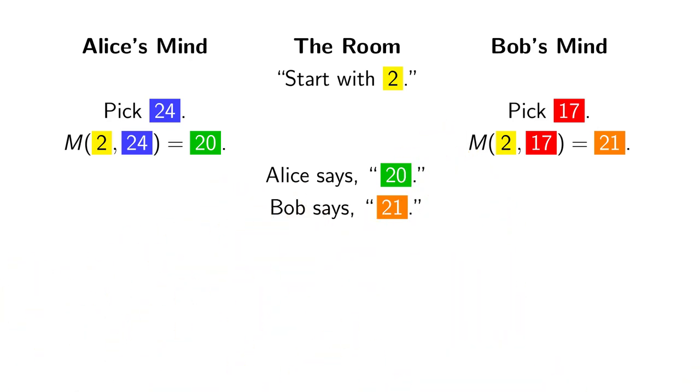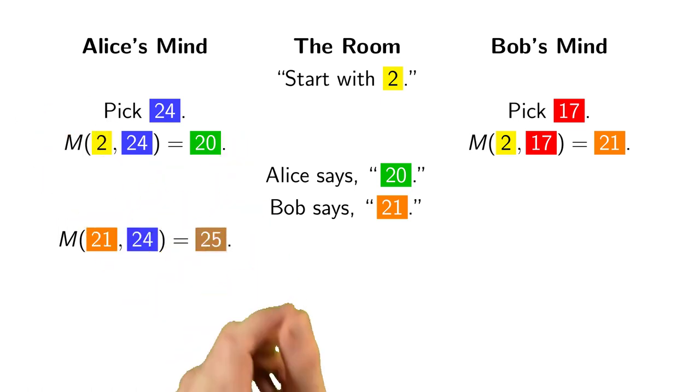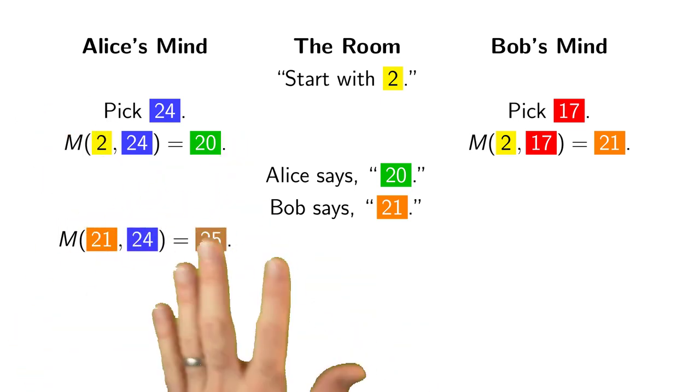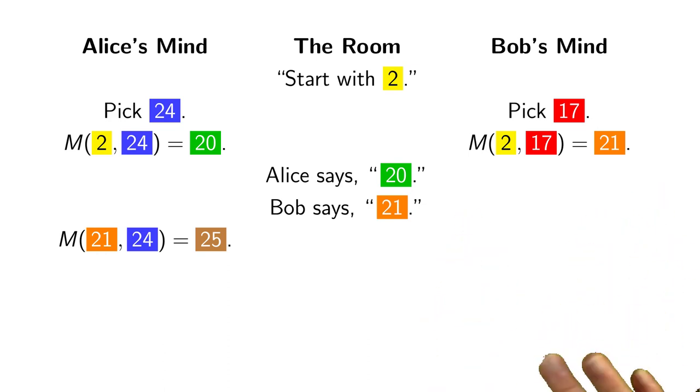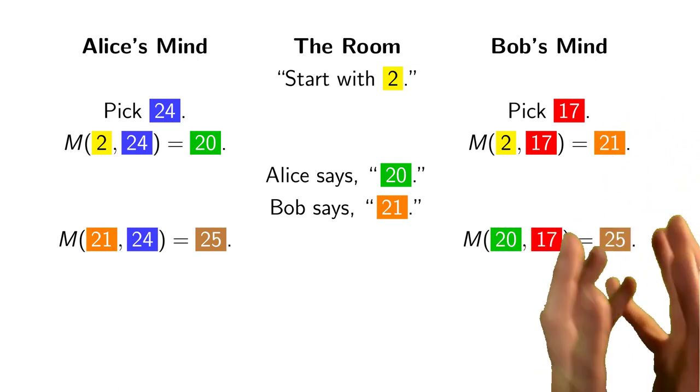Now, Alice heard Bob say 21. So Alice will take what Bob said and mix it in with her originally chosen secret number of 24. Let's say, in this case, that mixing process results in the number 25. Bob will do the complimentary thing. Bob heard Alice say 20. And Bob will mix the number 20 with his originally chosen number of 17. He'll also get 25.